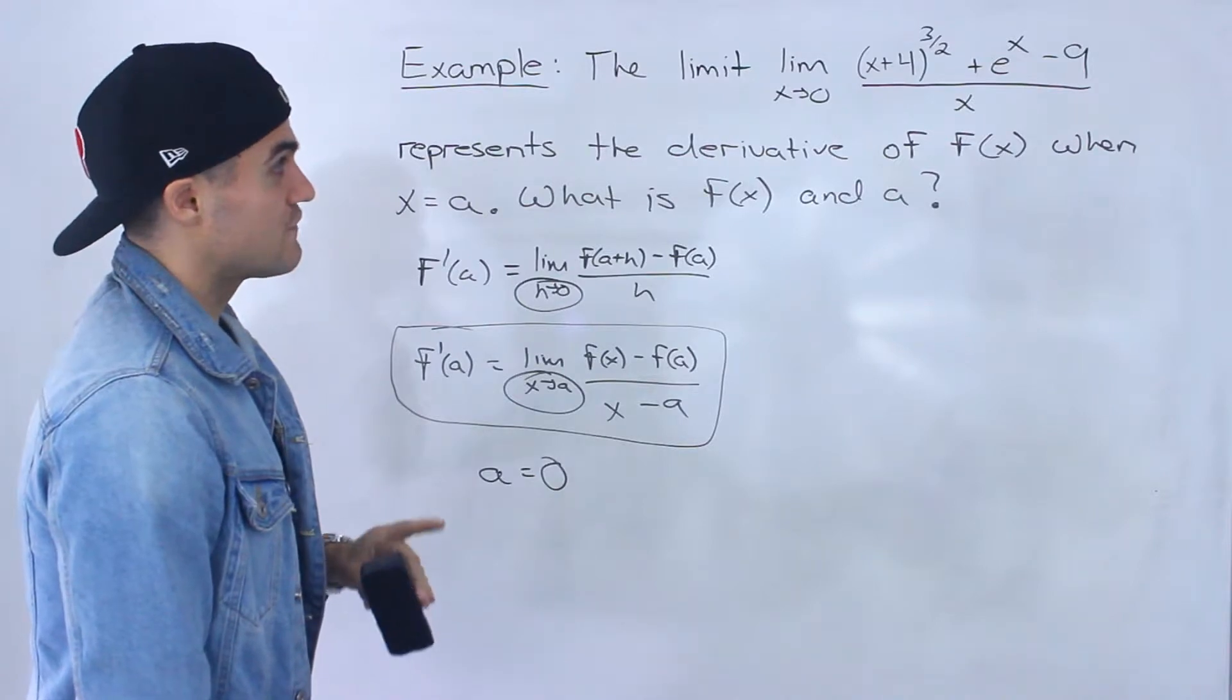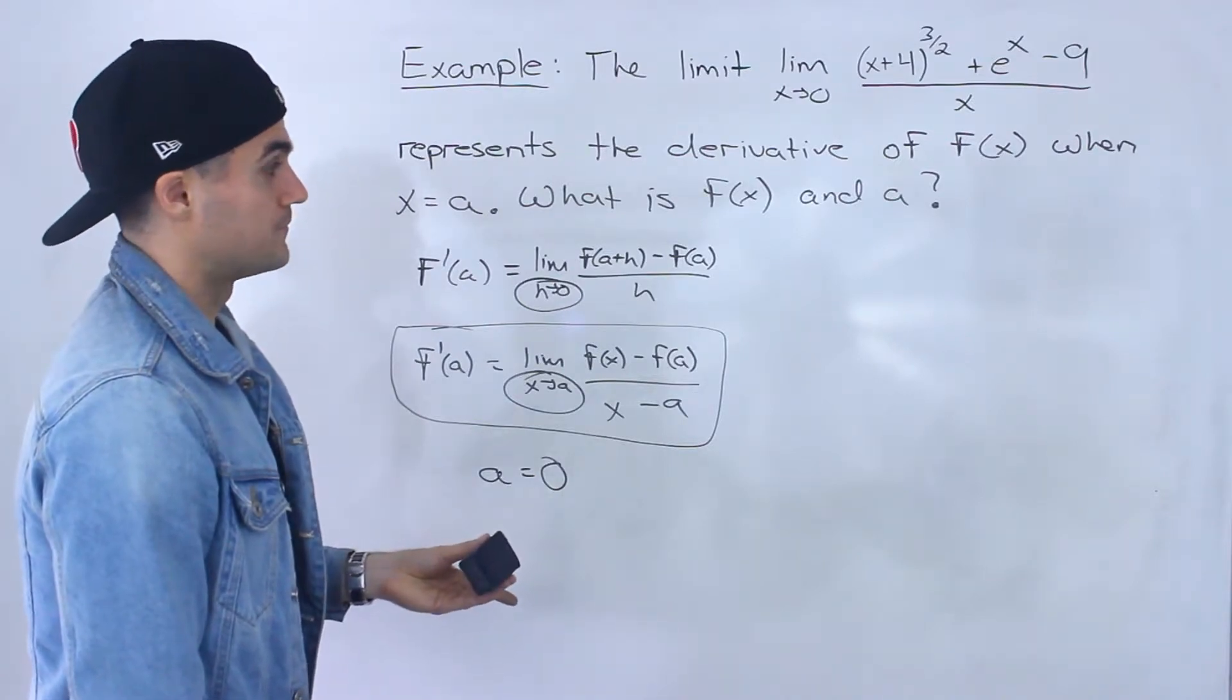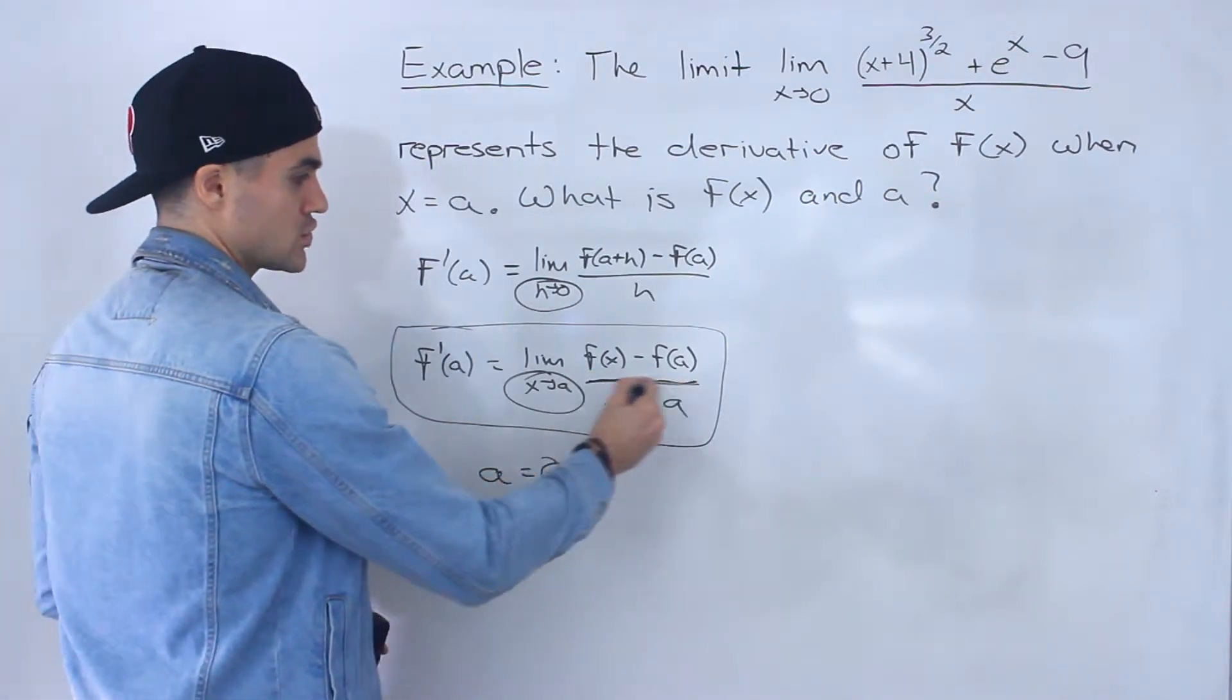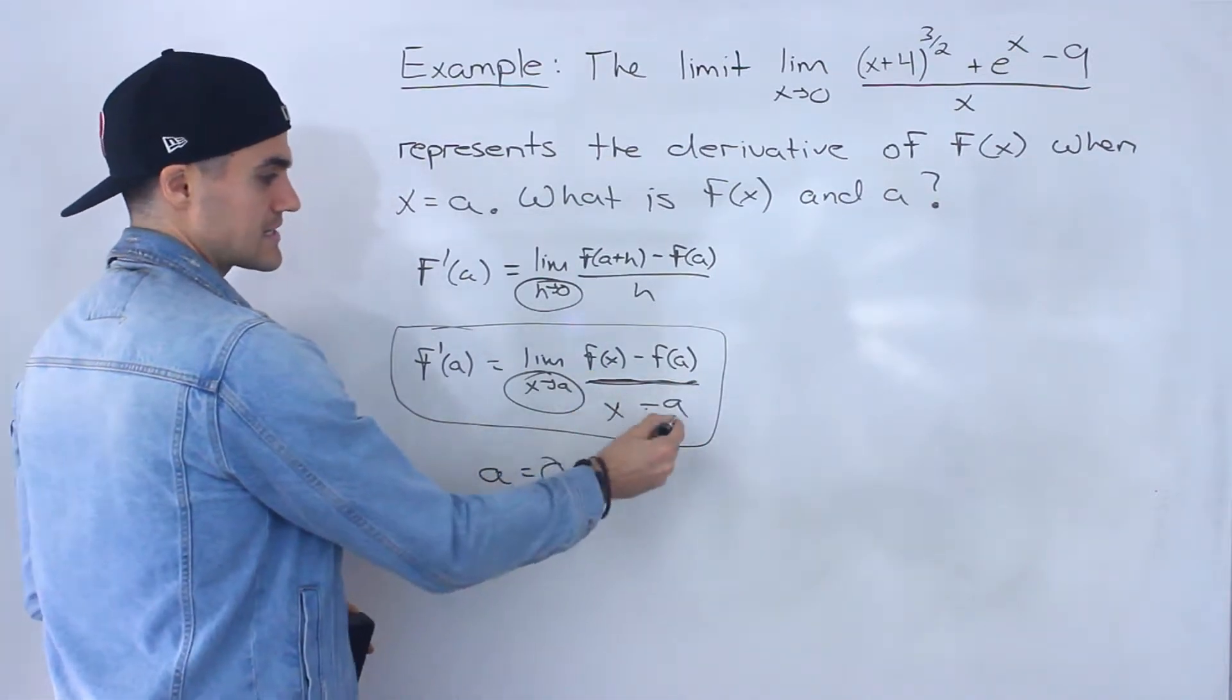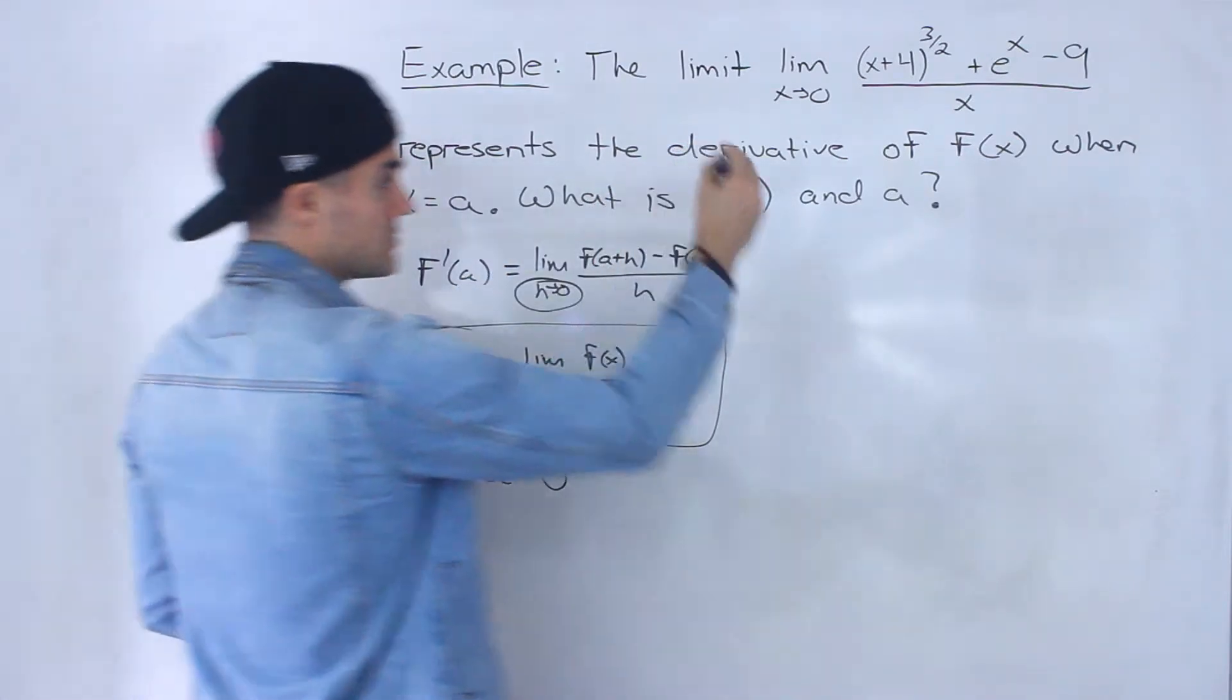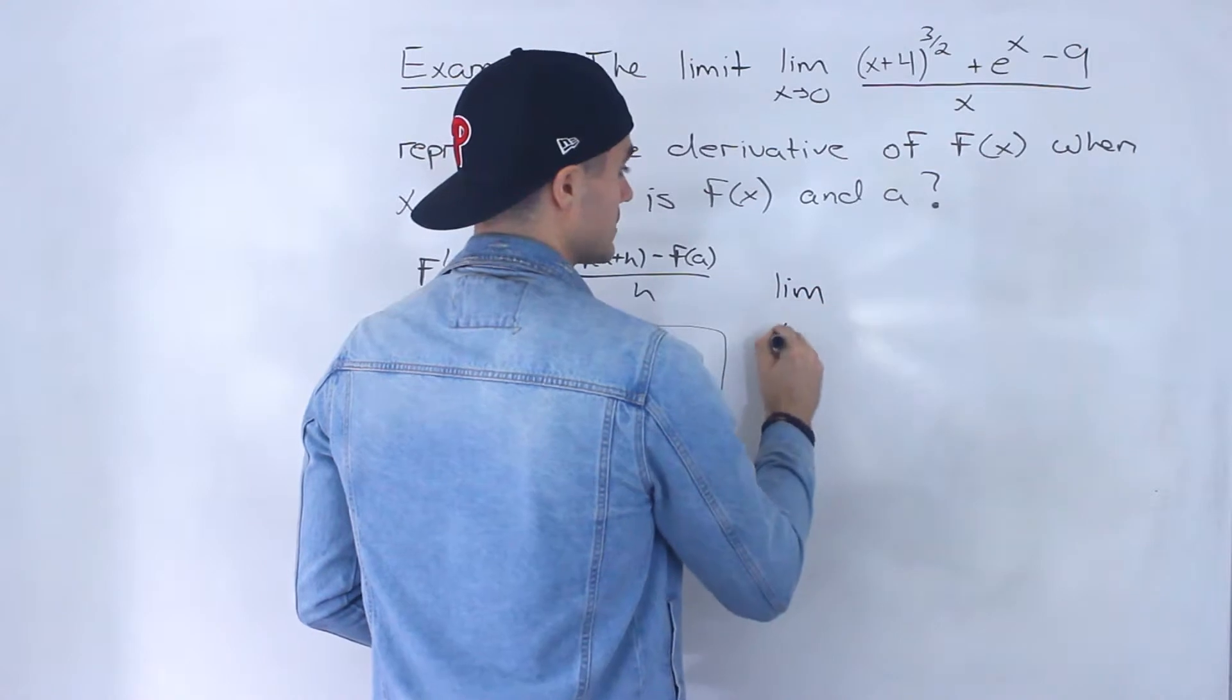The question is what's the function going to be. Notice that here in this definition we got x minus a, but here we only have an x by itself. But that actually makes sense, so what I'm going to do is actually rewrite this limit.